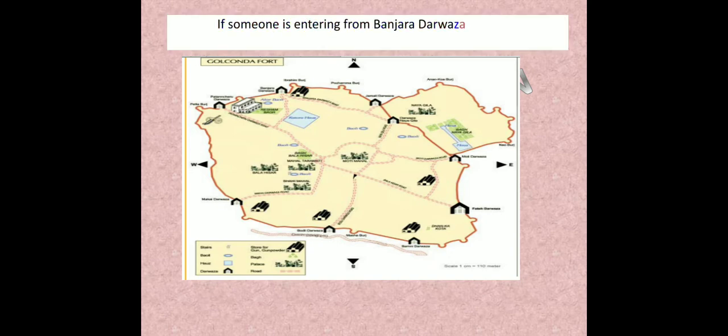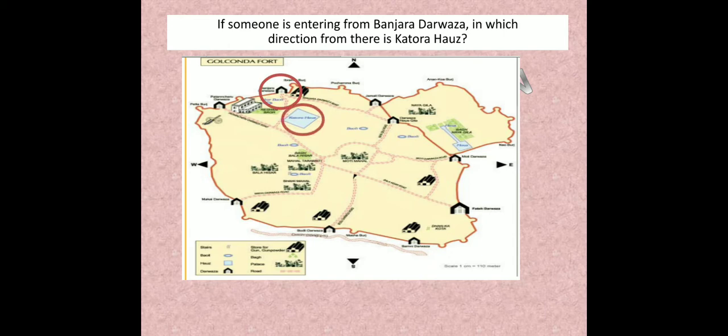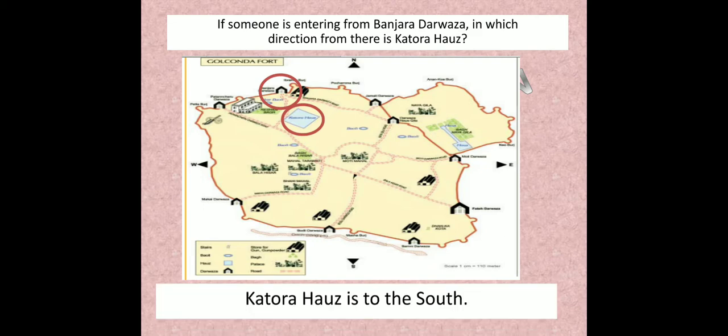If someone is entering from Banjara Darwaza, in which direction from there is Katora Haas? Banjara Darwaza is here and Katora Haas is here. We can see Banjara Darwaza is closer to the north direction. So Katora Haas is to the south of Banjara Darwaza.